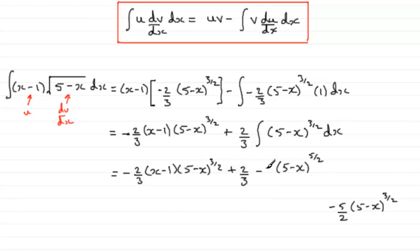So if I insert minus 2 fifths here, better put that in brackets though, then differentiating this minus 2 fifths times 5 minus x to the power 5 over 2 would give me 5 minus x to the power 3 over 2.